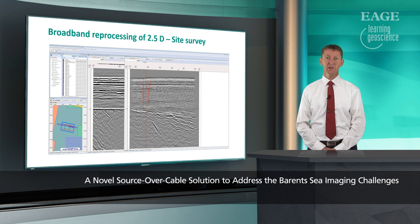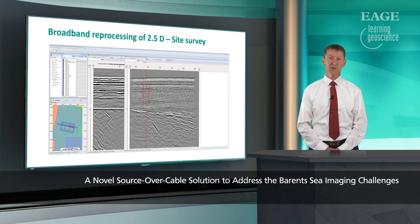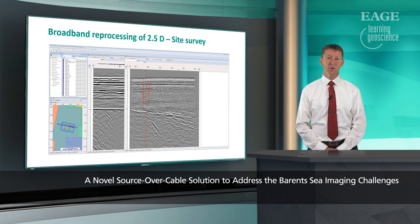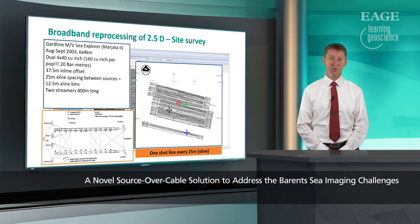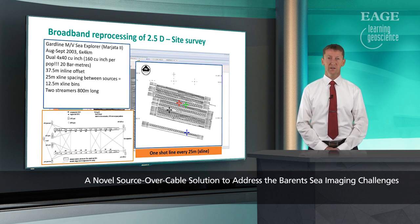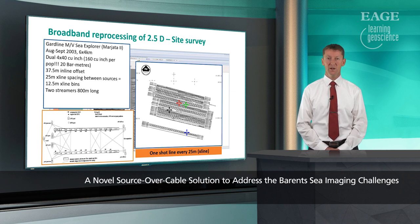Here is a reprocessing of a very old two-and-a-half D — essentially a 3D site survey of only 25 square kilometers — and you are able to compare the two images and see a very large uplift from high-density broadband reprocessing of older legacy datasets. The parameters for this 3D site survey data include a very small source of only 160 cubic inches, and the bins are very small, giving high spatial resolution, but there is only a very short offset of 800 meters.